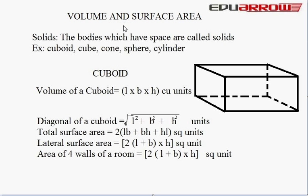Today we will read volume and surface area. First we read solid. The body which have space are called solid. Like cuboid, cube, cone, sphere, cylinder.